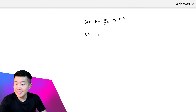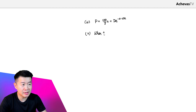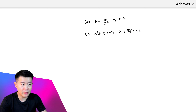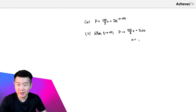The question says after many years, which means we are once again looking at the scenario when t tends to infinity. Looking at this expression, when t tends to infinity, the term D·e^(−0.03t) is going to become 0, which means p tends to 100n/3. According to the question, this value of p is actually equal to 500, so solving for n from (100/3)n = 500, we get n equals 15.